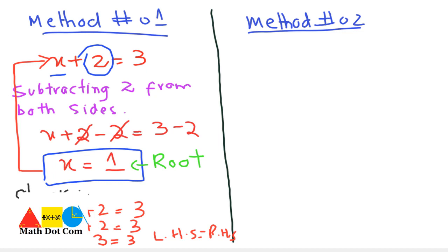This was Method 1. Now let's find the solution using Method 2. We have x plus 2 equals to 3. Again, in order to find the value of x, there should be nothing — multiply, divide, add, or subtract — with x.